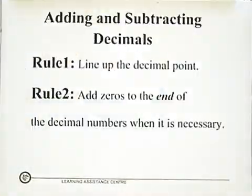For adding and subtracting decimals, we have two rules to follow. Rule 1: line up the decimal point. Rule 2: add zeros to the end of the decimal numbers when necessary.